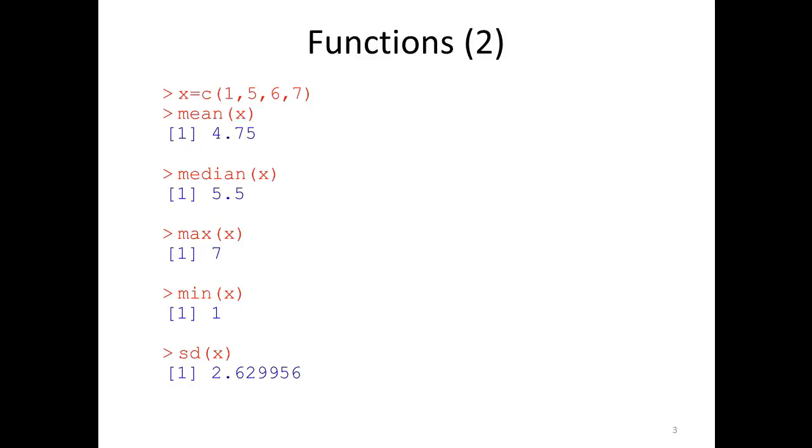Here we look at a few functions, just a few examples of functions that you may have encountered previously. We start by defining a vector containing the numbers one, five, six, and seven. If you write mean and provide as a single argument this vector, then you get the arithmetic mean. If you write median, you get the median obviously.